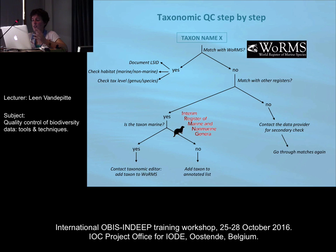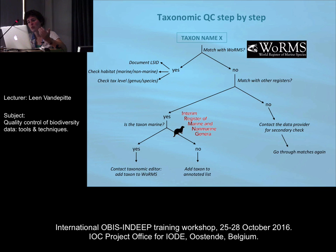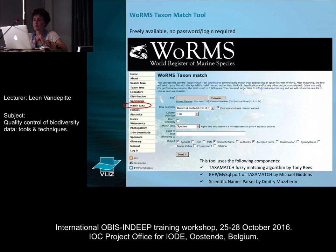If it doesn't match with any of the other registers, you go back to your provider for a secondary check. If you get an update from them, if you get a new name, you just run the whole taxonomic QC again.